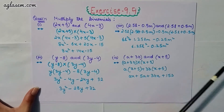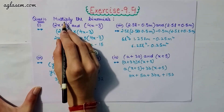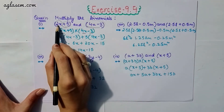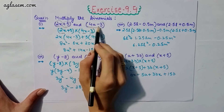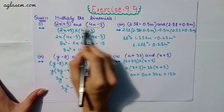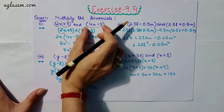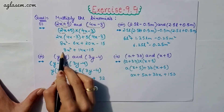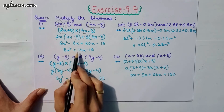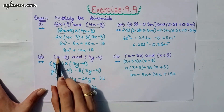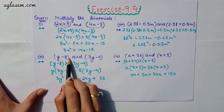Our first question says: multiply the binomials. The first part is (2x + 5) and (4x − 3). It's very easy to solve — 2x will be multiplied by the second bracket and 5 will be multiplied by the second bracket. So our answer will be 8x² + 14x − 15.